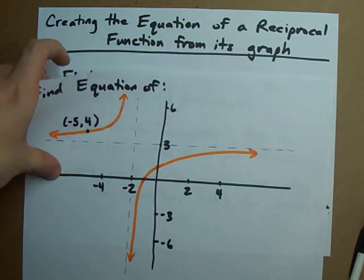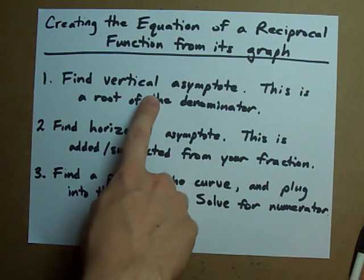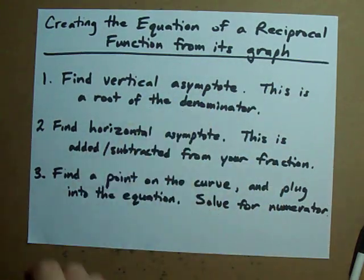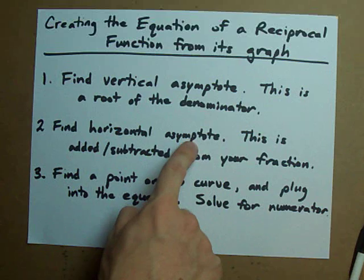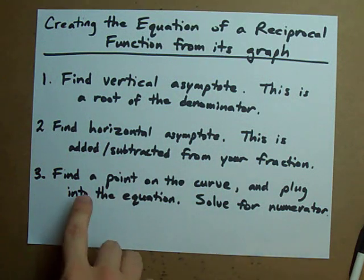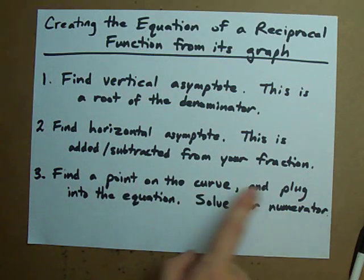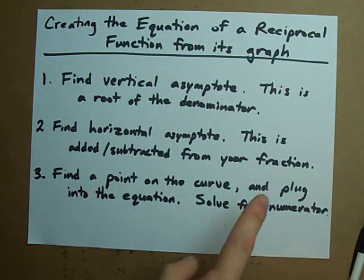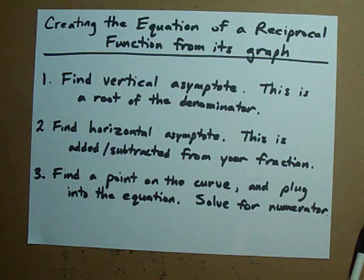Here's how you're going to do it. You're going to find the vertical asymptote and remember that it's a root of the denominator. You're going to find the horizontal asymptote. This is added or subtracted from the fraction. Then you're just going to find a point on the curve and plug it into the equation to solve for whatever your numerator might be.